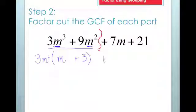Bringing down my plus sign, the greatest common factor on the right side is seven. Now I've taken the greatest common factor out of each part.